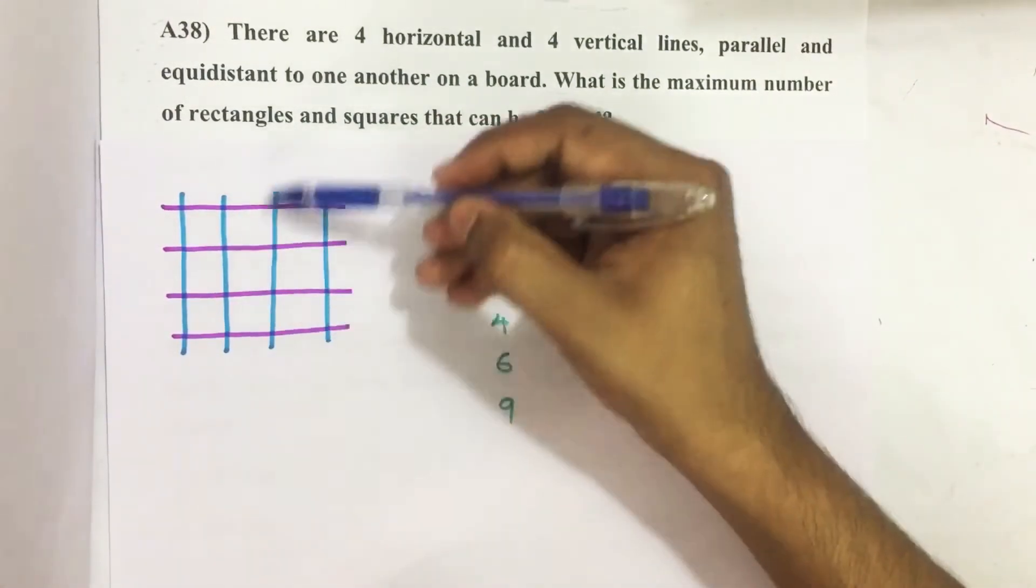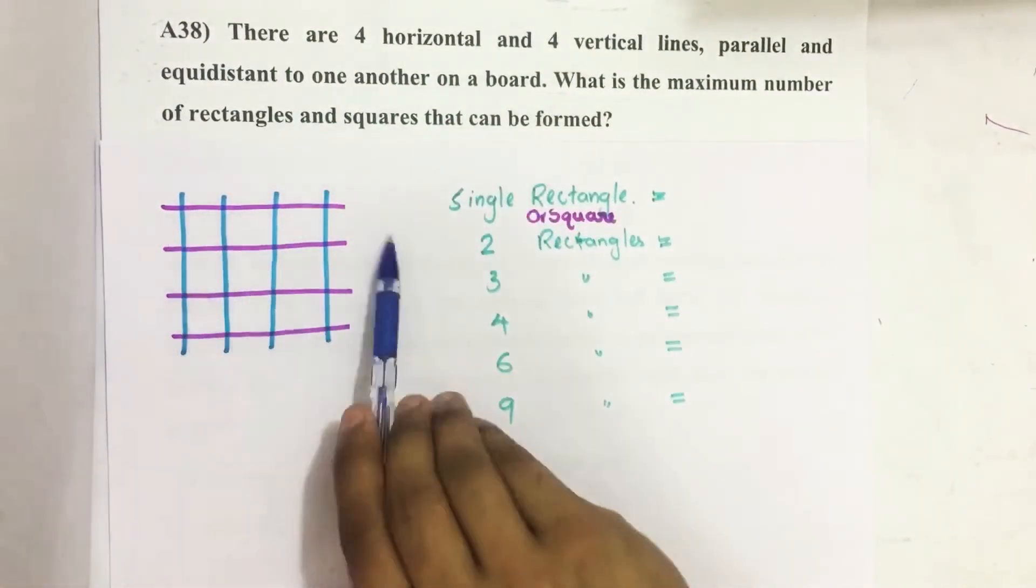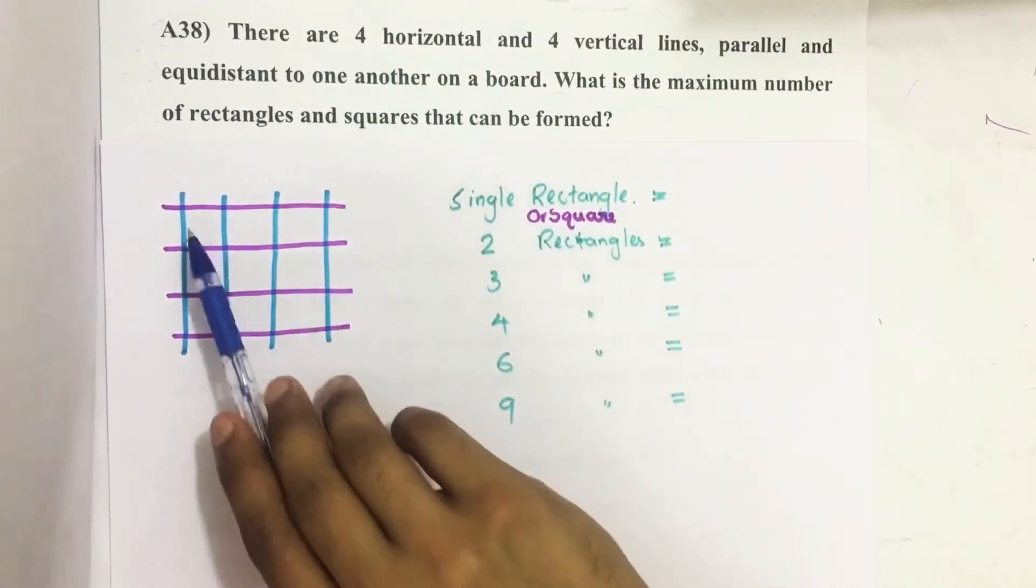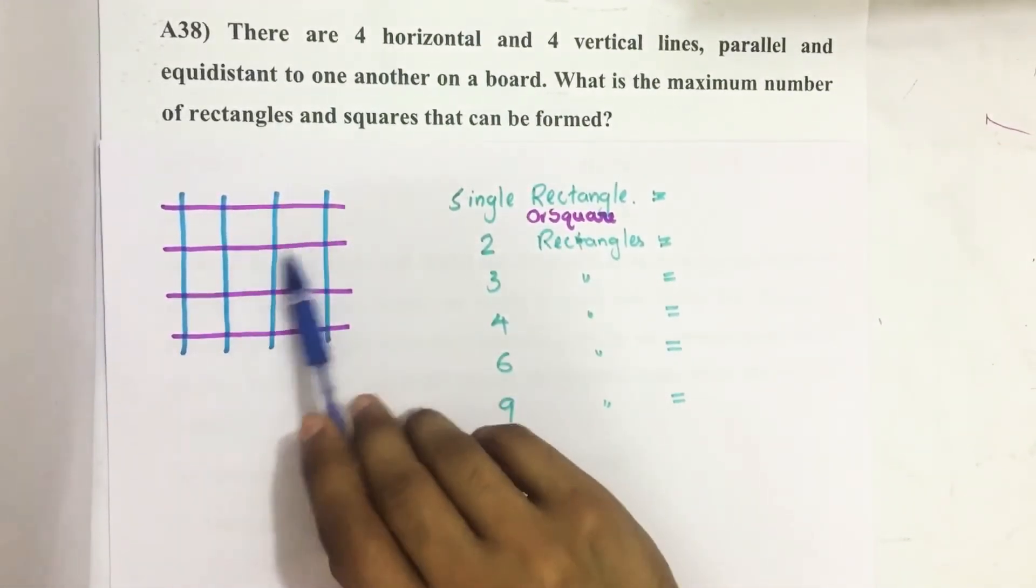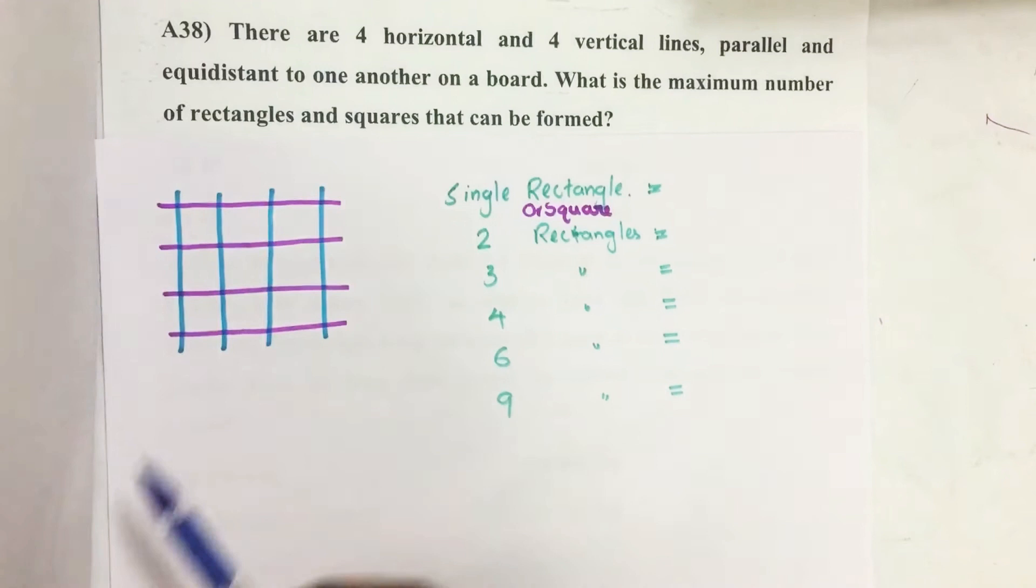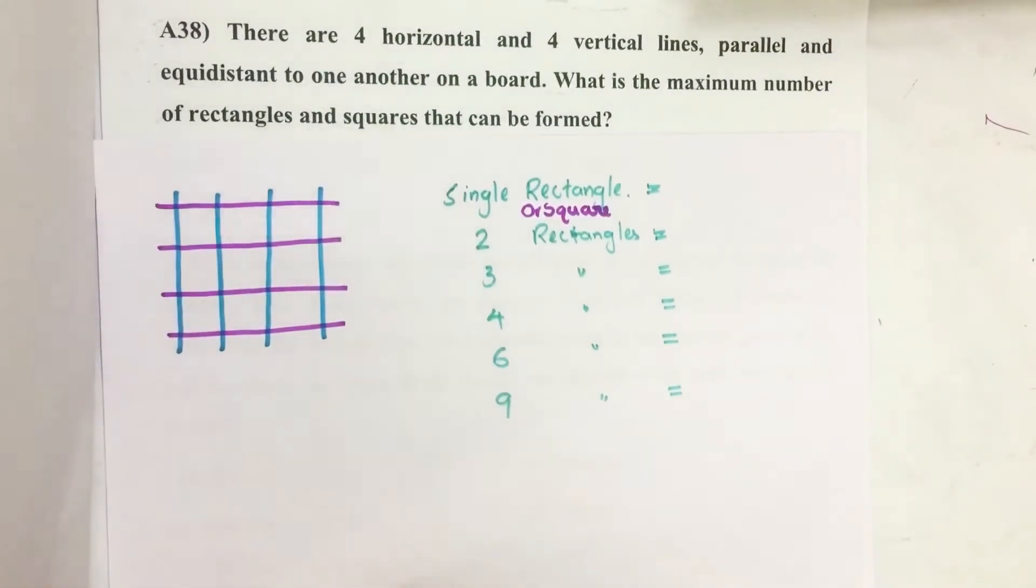Here there are four vertical lines and four horizontal lines which form some squares and rectangles. We need to count how many such rectangles and squares are there.